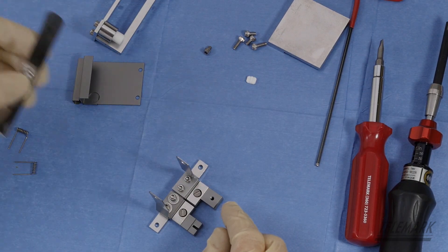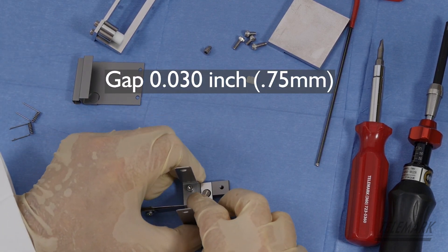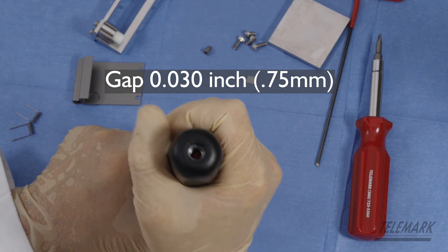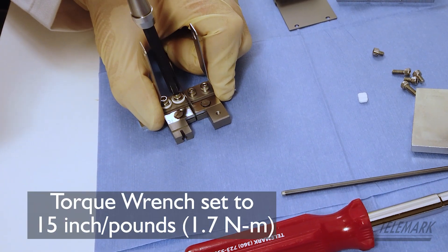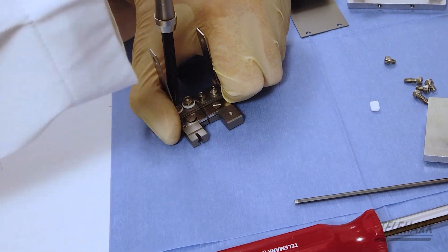They've got a feeler gauge here set for 30 thousandths. Get 30 thousandths gap between your two cathode blocks. Grab your torque wrench, which in this case is set to 15 inch pounds. Just snug them all down. Got them all snugged down.